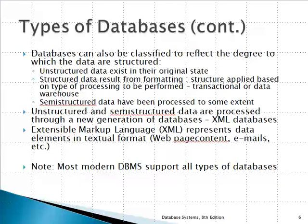More recently, another classification criterion was introduced based on the degree of data structuring. A plain English text is an unstructured document because you need to understand the language to process it. On the opposite side, a table with data — such as grades and names of students — is a structured document. In between, there is semi-structured data, such as an XML document, which contains both plain text and a hierarchical organization that specifies the meaning of the text. Most modern database management systems support all types of databases.